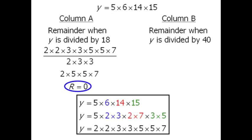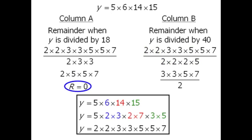Now over to column B. Here we'll divide y by 40, and notice we've taken 40 and rewritten it as the product of prime numbers. Once again we can eliminate some terms here, leaving us with the following fraction.